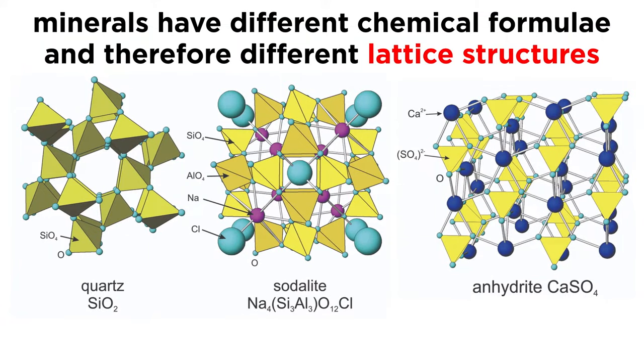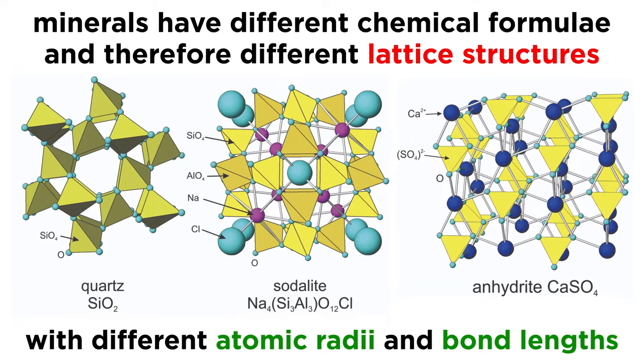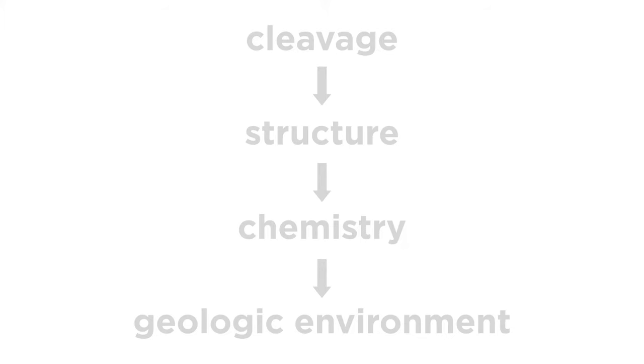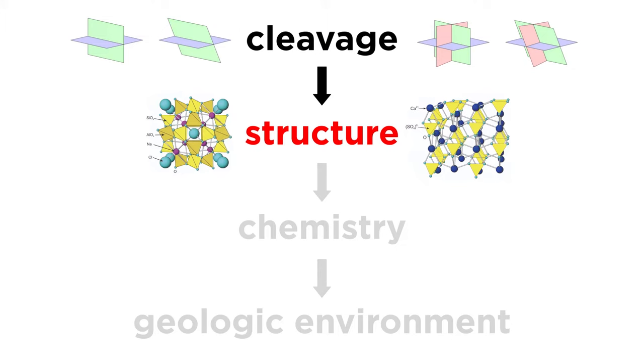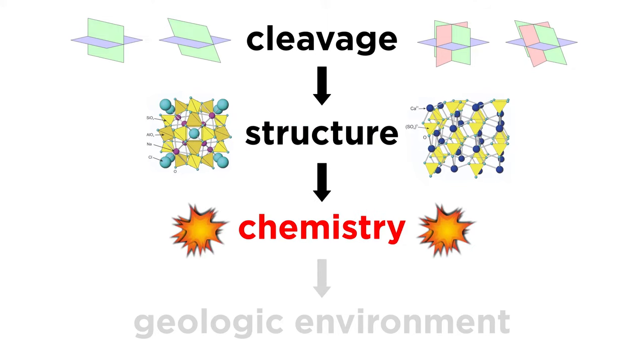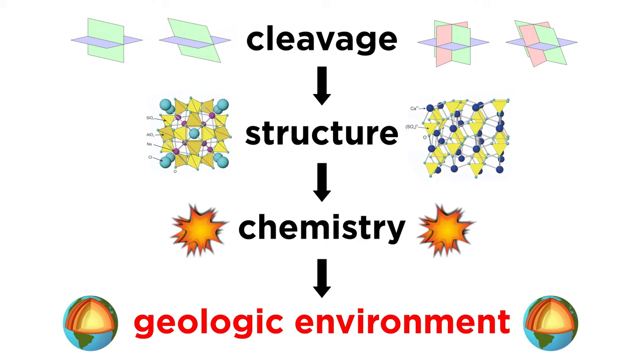In addition, a mineral's chemistry directly affects its lattice structure due to differences in atomic radii and bond lengths. This means that from a clear macroscopic property, like a mineral's cleavage, we can potentially know something about its structure which we can relate to its chemistry and which we can use to know something about the geologic environment in which it formed.